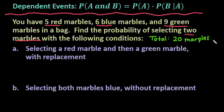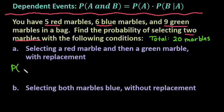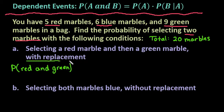To find the probability of an event, we just take what we are looking for divided by the total. So for the first one, we are looking for the probability of red and then green. This tells us that we are going to do this with replacement.